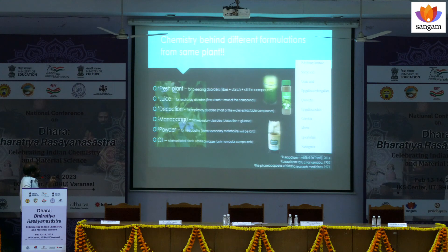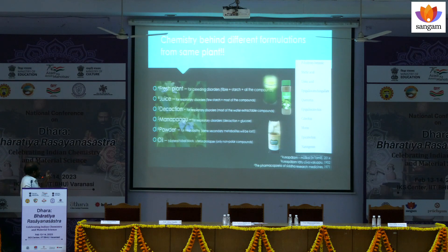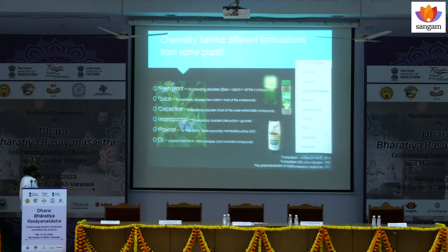When you use a fresh plant as such, you will have all the compounds of that plant — secondary metabolites, primary metabolites, along with fiber and starch. When you use all the things together you will have a different effect. When you prepare a juice, you remove most of the fiber, the starch, and a limited quantity of secondary metabolites, giving a different efficacy.